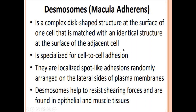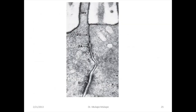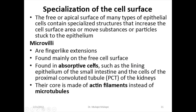Desmosomes are used to adhere cells together. Hemidesmosomes adhere the cell to the basement membrane. This electron photomicrograph shows the zonular occludens, made up of proteins called occludins, as well as the zonular adherens and desmosomes — this is how junctions between two cells appear under an electron microscope.